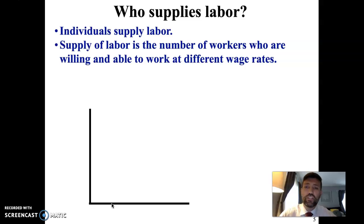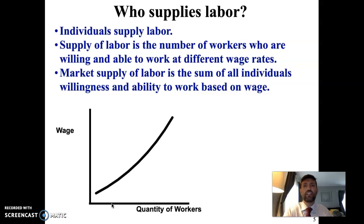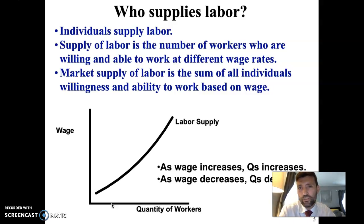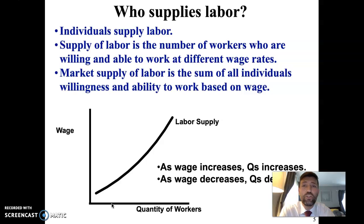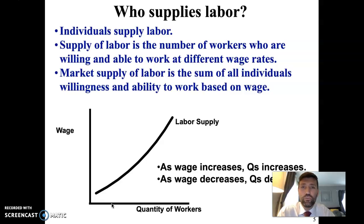The supply of labor is the number of workers who are willing and able to work at different wage rates. Just as in the product market, the supply curve is upward sloping. Think about yourself — what wage would it take for you to leave school and go work? Certainly not minimum wage, but if offered $500 an hour to become an economist right now, you'd probably take that job. So the higher the wage, the more willing and able people would be to join that industry and offer their time.